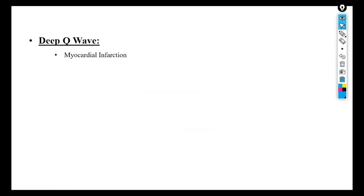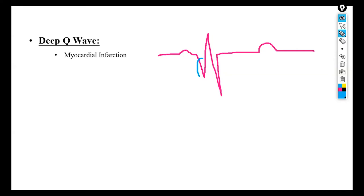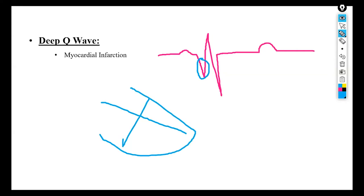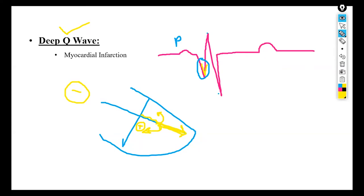The next finding is a deep Q wave, which generally indicates myocardial infarction. In the QRS complex, when the Q wave is formed, some fibers carry current back towards the negative lead of the ECG electrode, naturally forming a small Q wave. Then the current moves strongly toward the ventricles giving a strong R wave, and when the direction reverses we get the S wave. Whenever the Q wave is deep, it means more current is going back — indicating myocardial infarction.